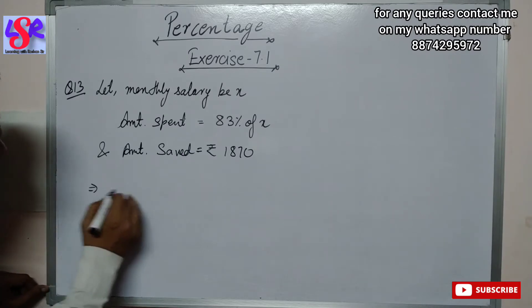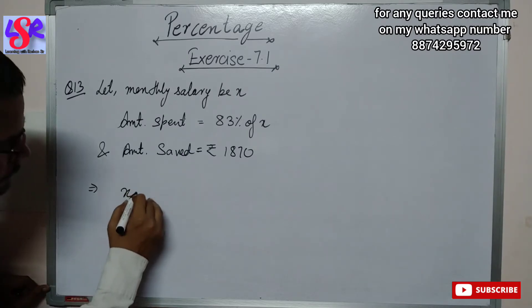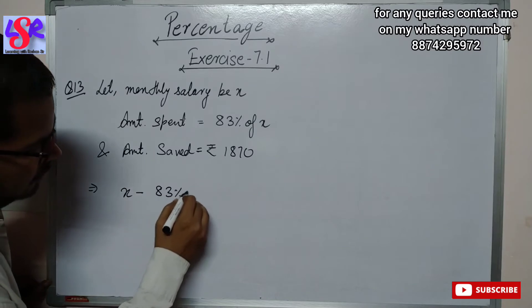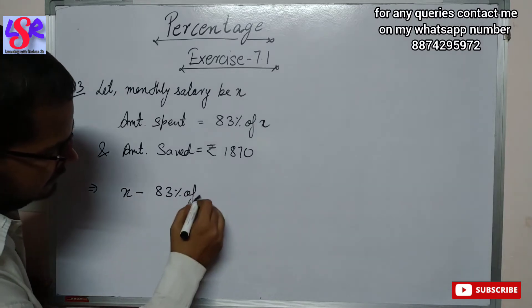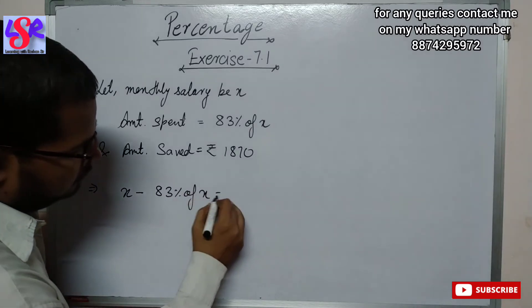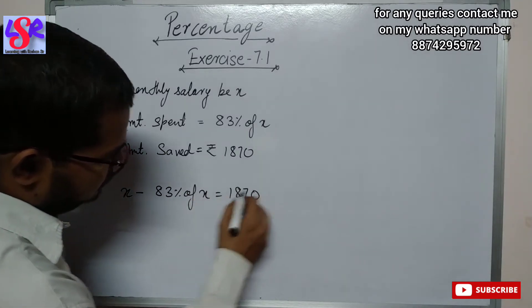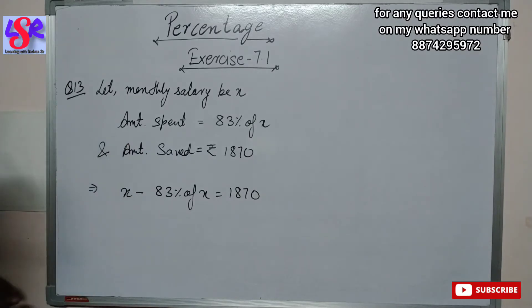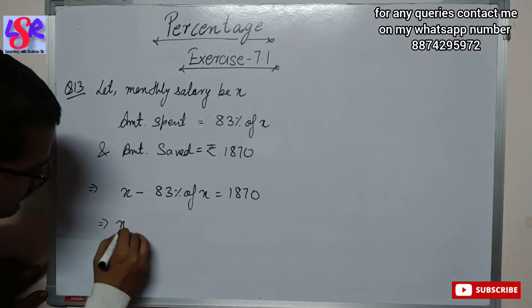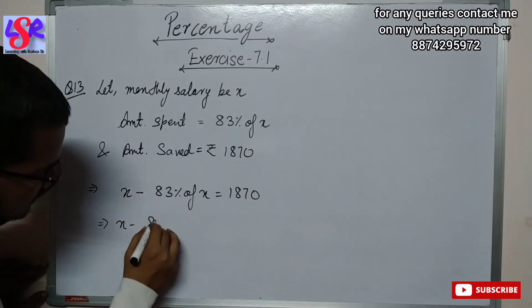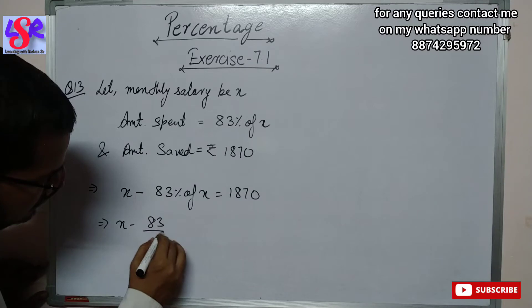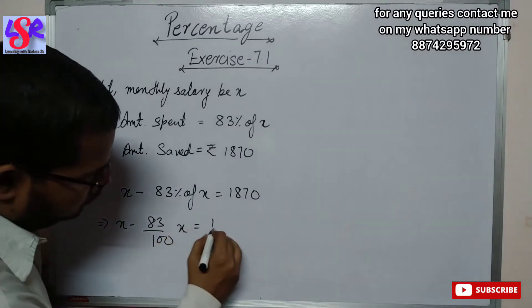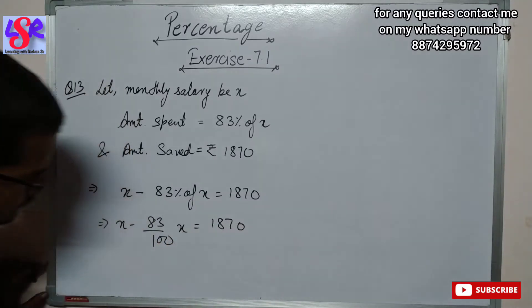Therefore, x minus 83% of x equals 1870. Now we can solve this, and this can be written as x minus 83 upon 100 times x equals 1870.